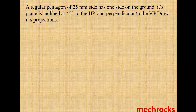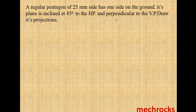They give a pentagon of 25mm. One side on the ground — ground means horizontal plane. This plane is inclined at 45 degrees to the horizontal plane. For this we have to draw the plan. We have to assume this 45 degrees as 0 degrees, that means parallel to the horizontal plane. In the horizontal plane you will get the top view, so first you have to draw the top view as a pentagon.